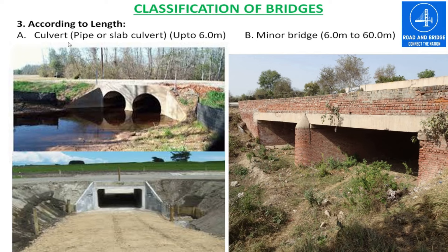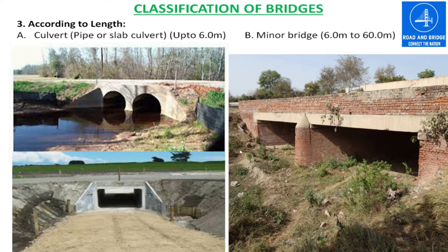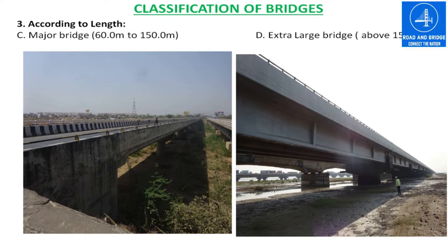Culverts can be classified into two groups: pipe culverts and slab culverts. For a minor bridge, the length will be 6 meters to 60 meters. A major bridge belongs to the range of 60 meters to 150 meters, and an extra-large bridge is above 150 meters.